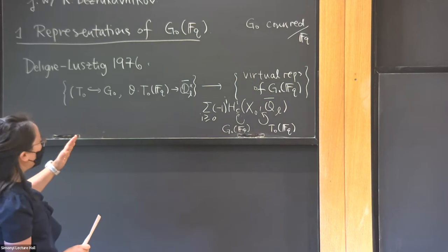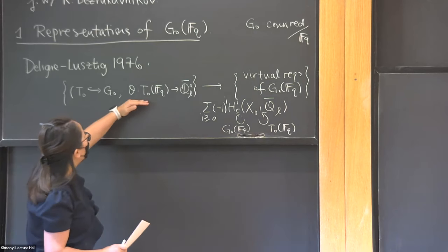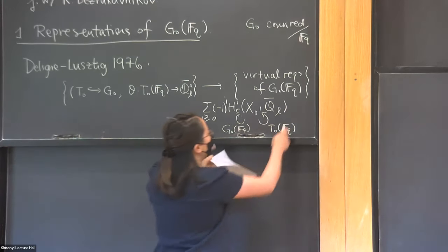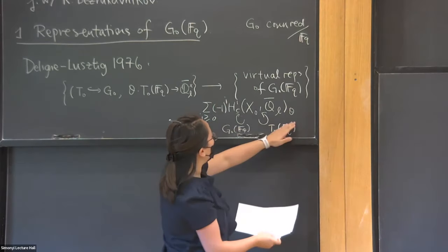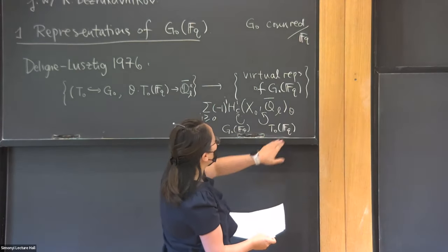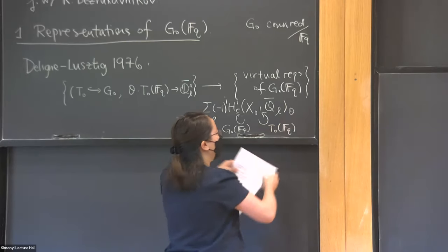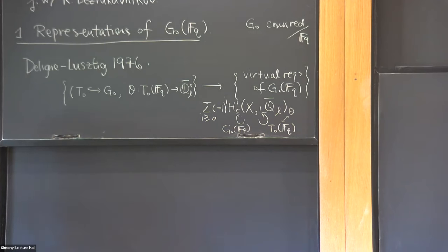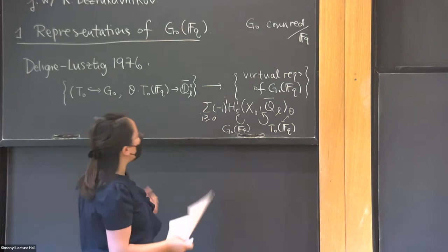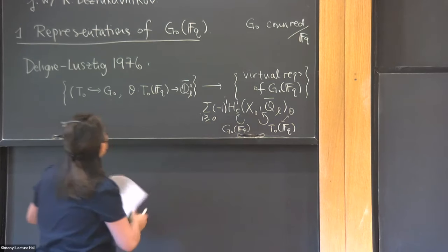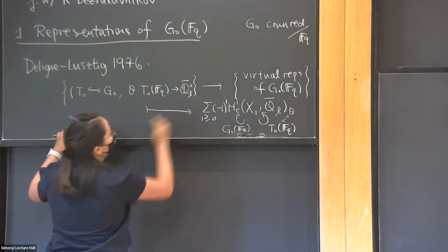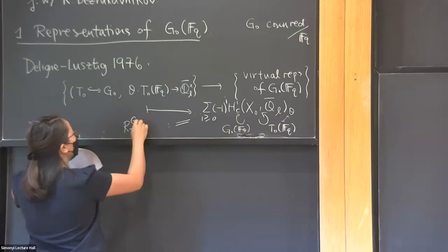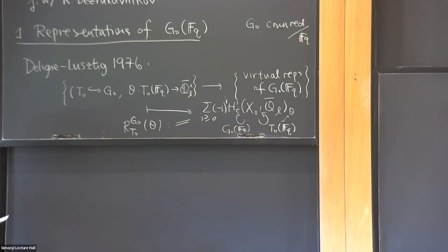The last piece of information I haven't yet used is this character θ. What I will do is look inside each of these vector spaces and only take the piece where the T_0 action is by θ. So θ is specified by T_0, and now I get a representation of G_0(F_q). That's the recipe, and this guy is often denoted R^G_{T,θ}.